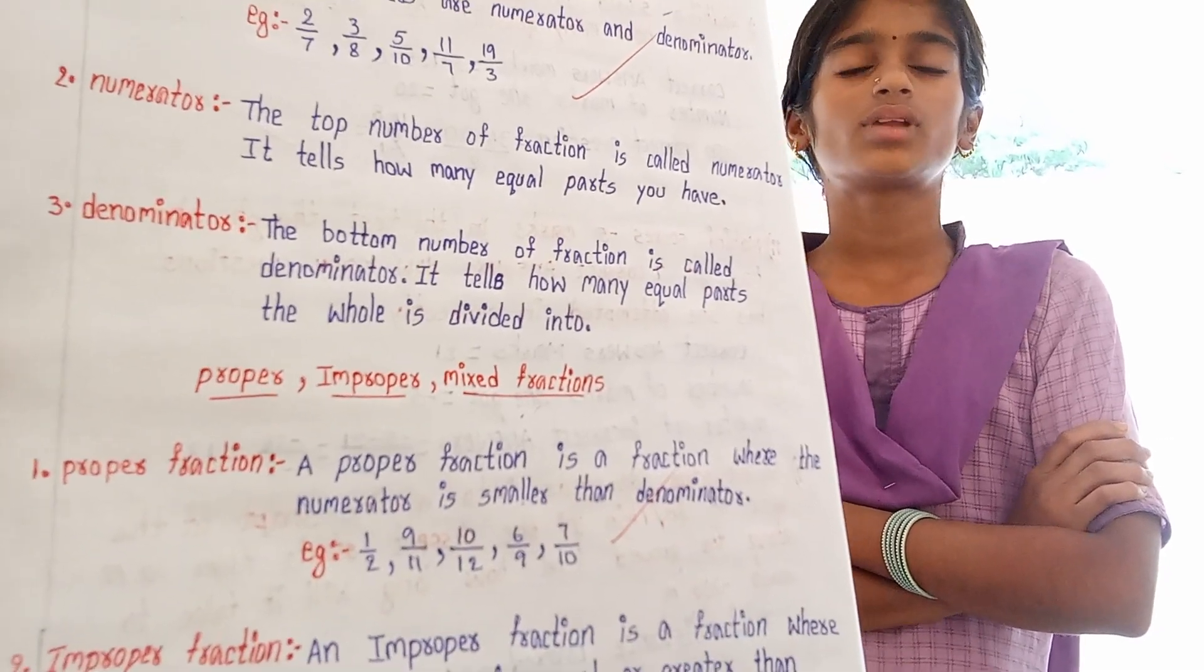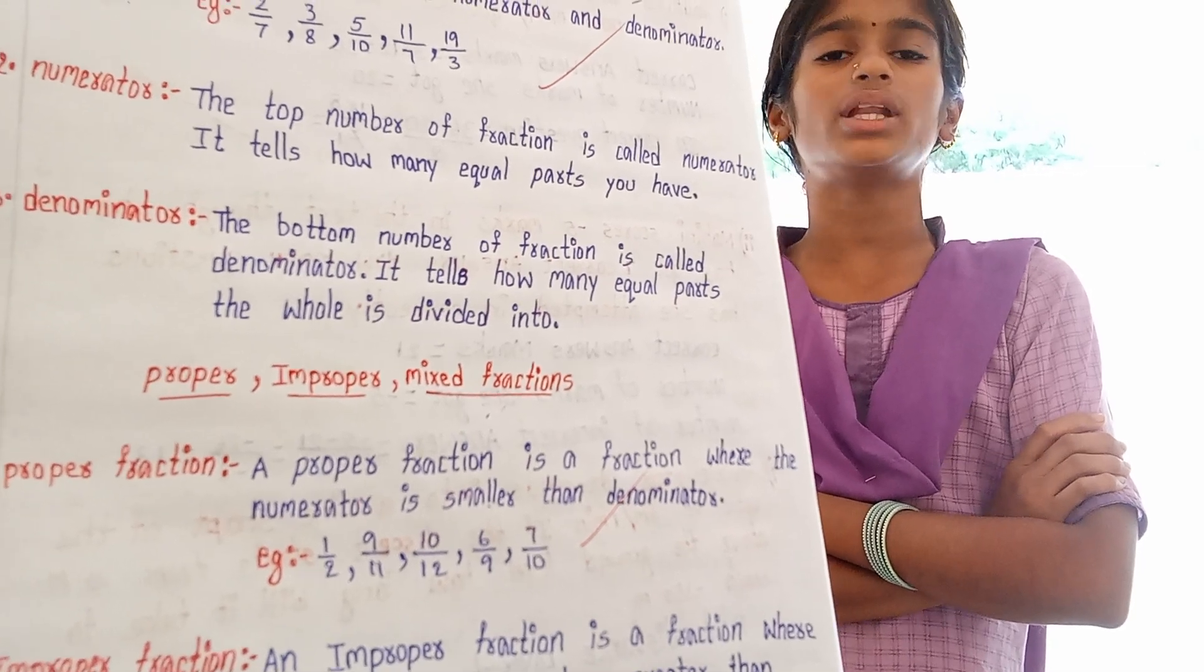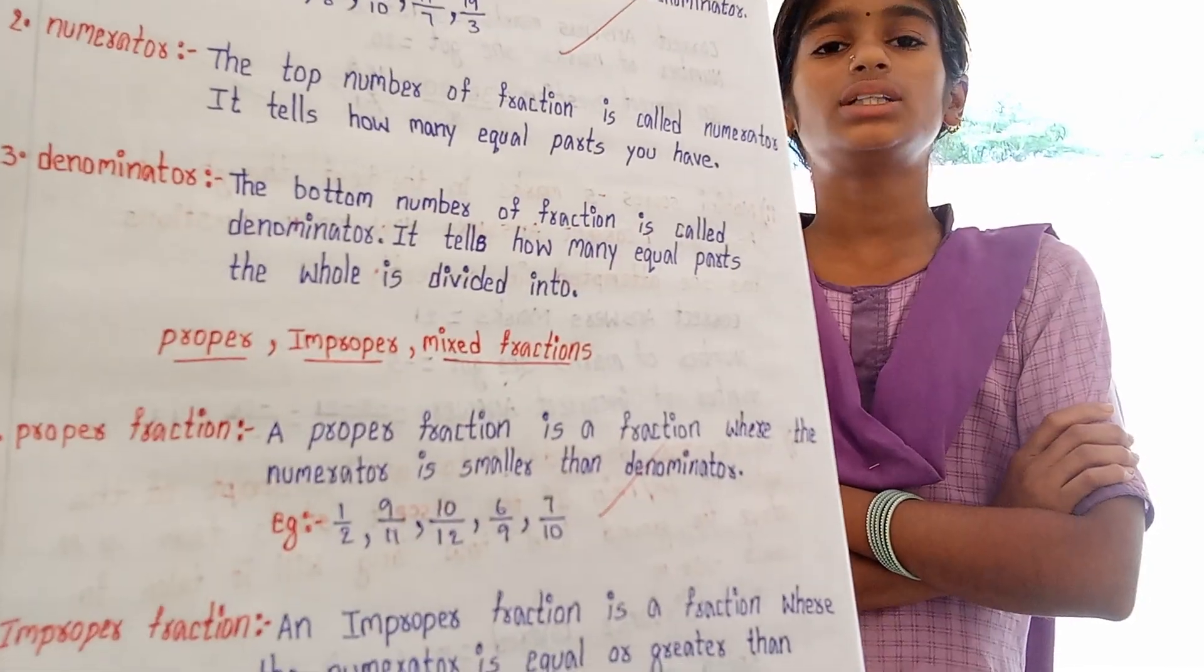Define the denominator. The bottom number of a fraction is called the denominator. It tells how many equal parts the whole is divided into.